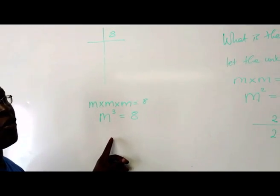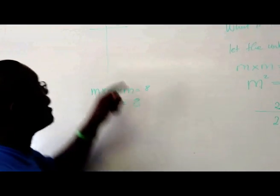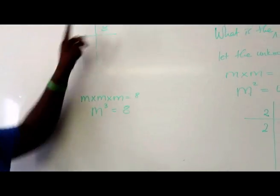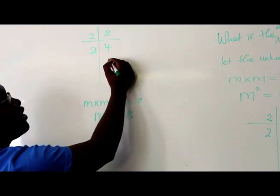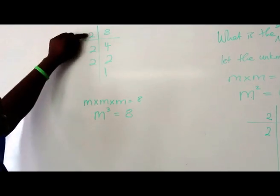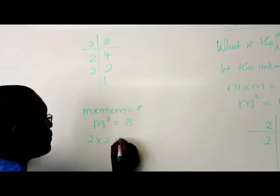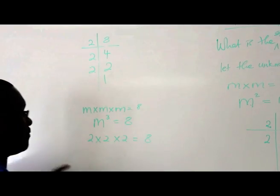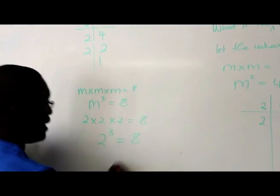We're going to use the same method of prime factorization. 8 is even, so 2 is a prime factor. You get 4. 2 into 4 is 2. 2 into 2 is 1. If you look, how many 2's do we have? 3 of them. So 2 times 2 times 2 equal to 8, meaning that 2 to the power of 3 equals 8.